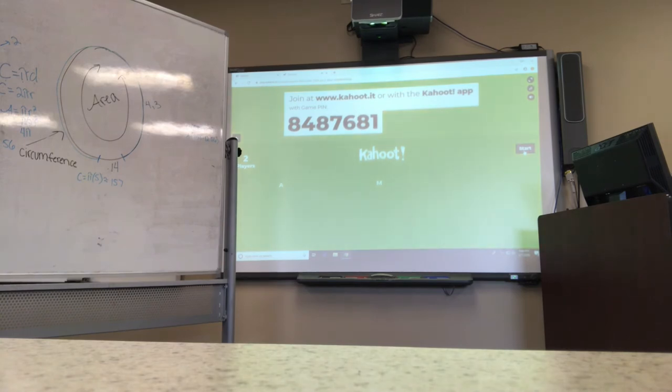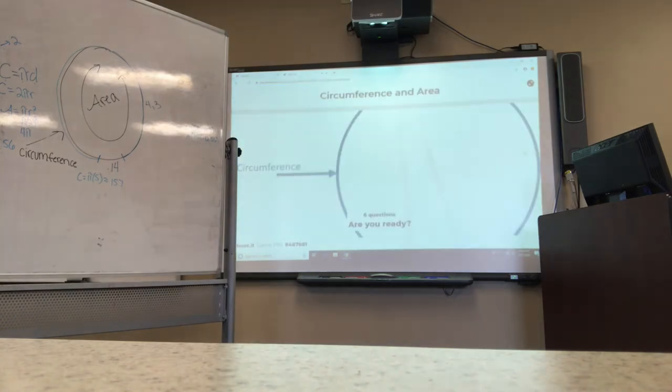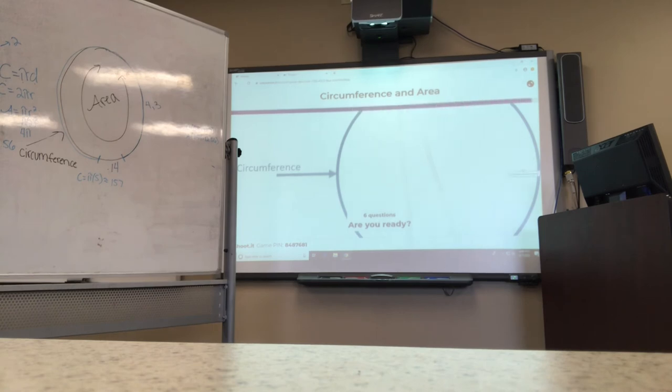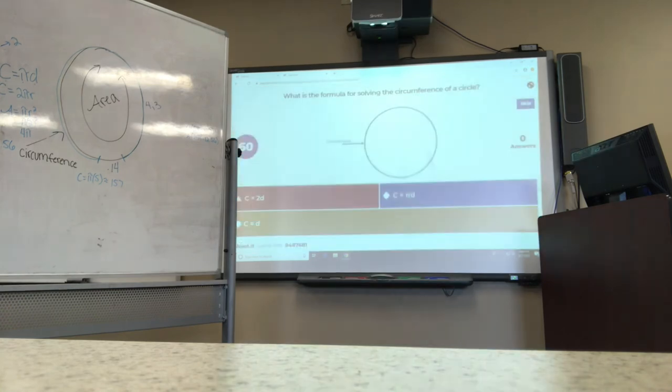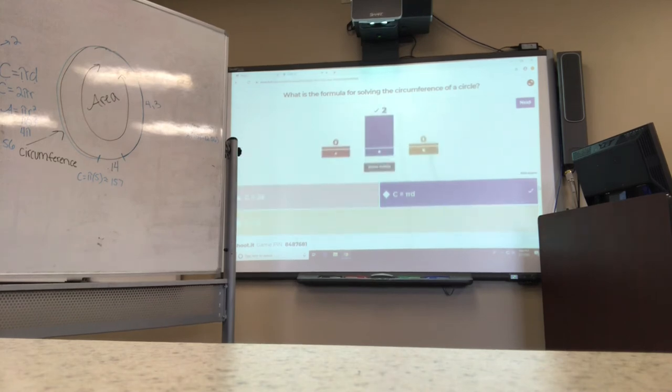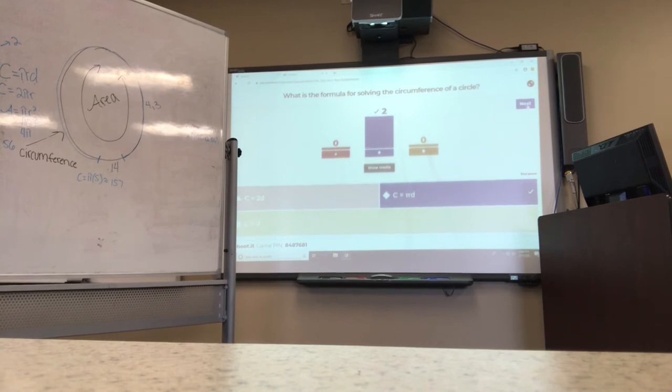You'll have a little over a minute and you'll be able to use your calculators as well. Let's get started. The first question: what is the formula for solving the circumference of a circle? Good, you guys are doing a great job. So the formula would be C equals pi D, or the circumference equals pi times diameter.